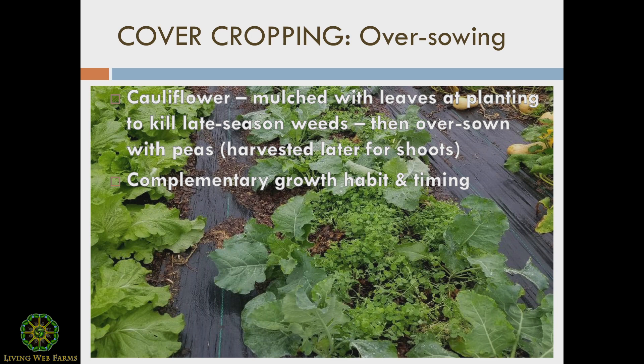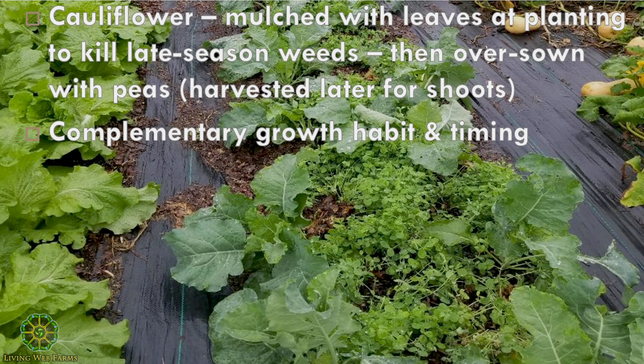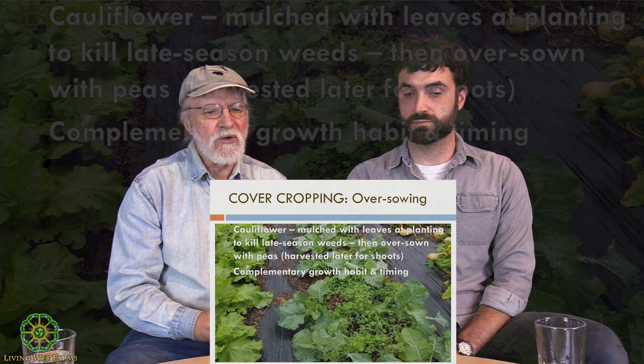We're constantly trying to control weeds, and we have access to leaves — neighbors deliver yards and yards of leaves to us. We mulch a lot, and we mulched a crop of cauliflower. I'd learned a year or two before that you can sow cover crop seeds on top of leaves without needing to pull the leaves off first. As long as you have moisture, those cover crops will germinate on top of that mulch, grow down through it, and thrive.